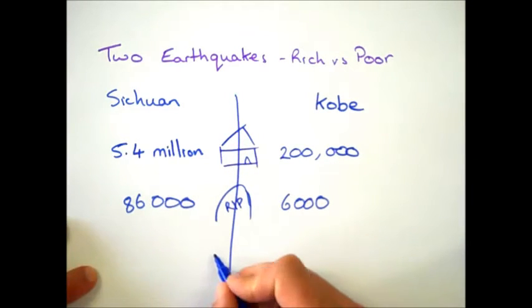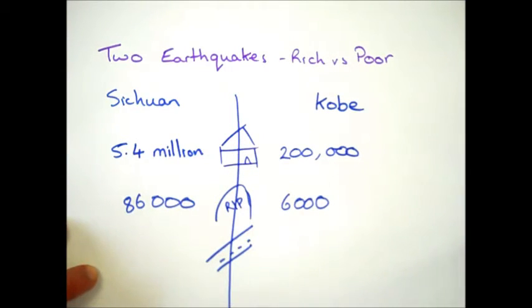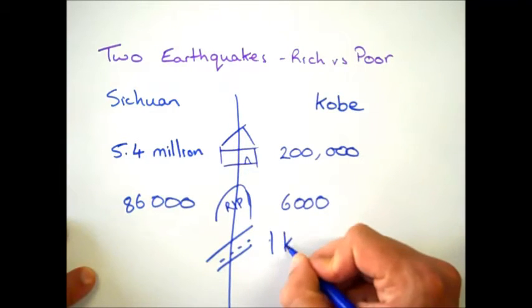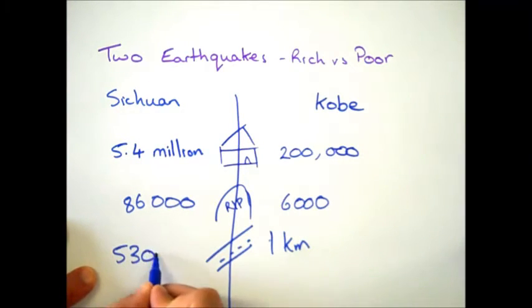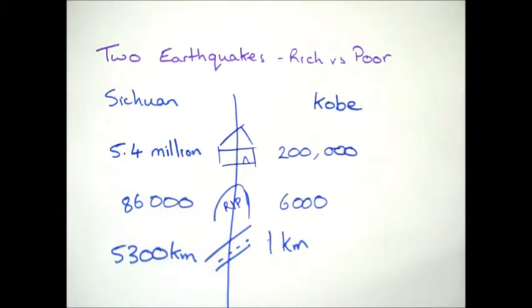In terms of roads destroyed, there's a big difference here. Many of Kobe's roads were designed to be earthquake-proof, and there was only about one kilometre of a highway in Kobe that was destroyed because they'd got their calculations slightly wrong. Compare that to 5,300 kilometres of road destroyed in Sichuan. This linked very closely to the scale of the disaster, in that Sichuan's roads were destroyed, so emergency services were unable to get to people in remote areas, which probably led to a higher number of deaths. We can start to see how poverty and all of these impacts link together.